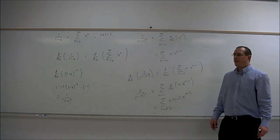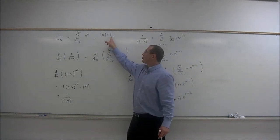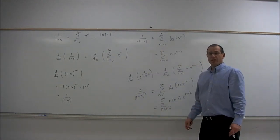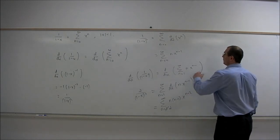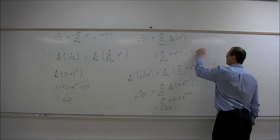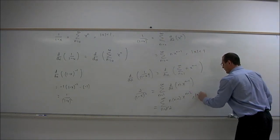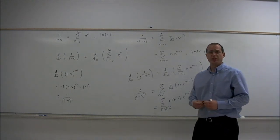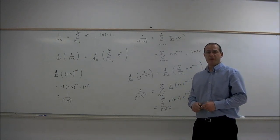One last comment: the interval of convergence of the original power series was absolute value of x less than 1. When you take the derivative of both sides of the equation, the interval of convergence remains the same. So here, and in the last one as well, the interval of convergence is absolute value of x less than 1. That's been a little presentation on differentiation of power series. I hope you found it instructive.